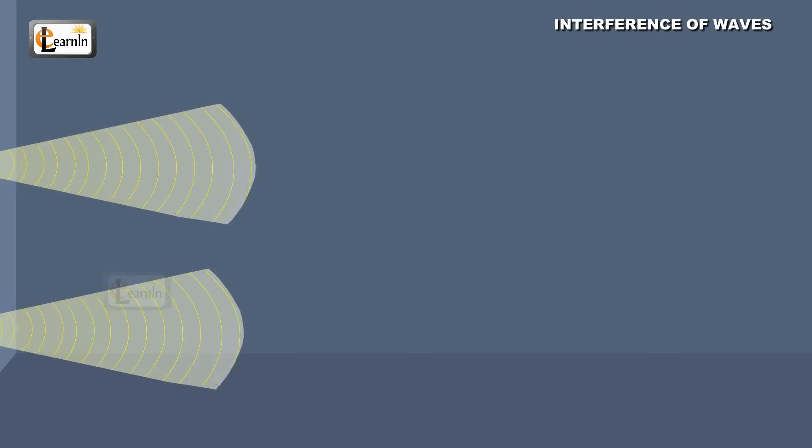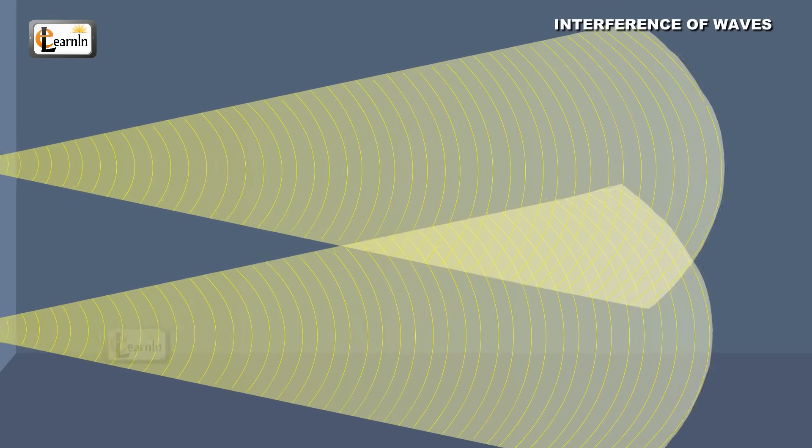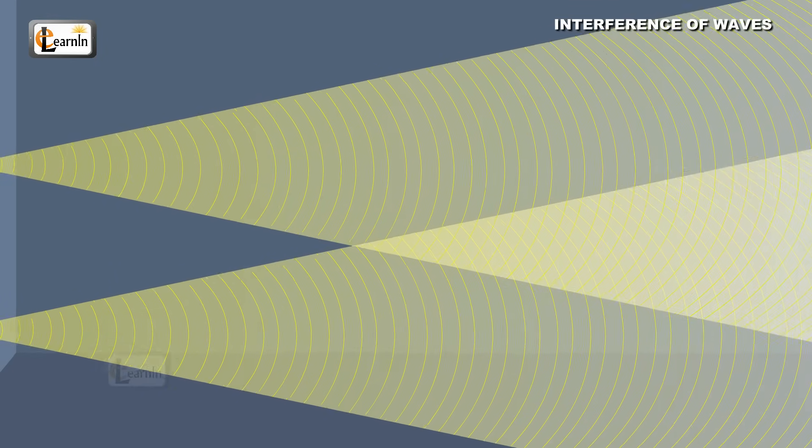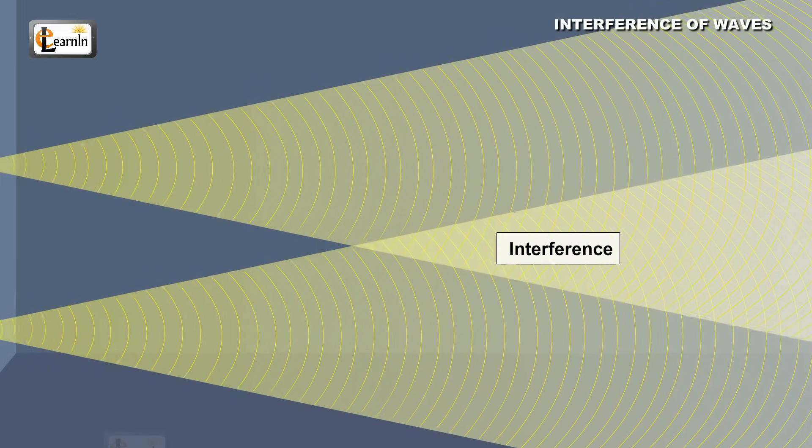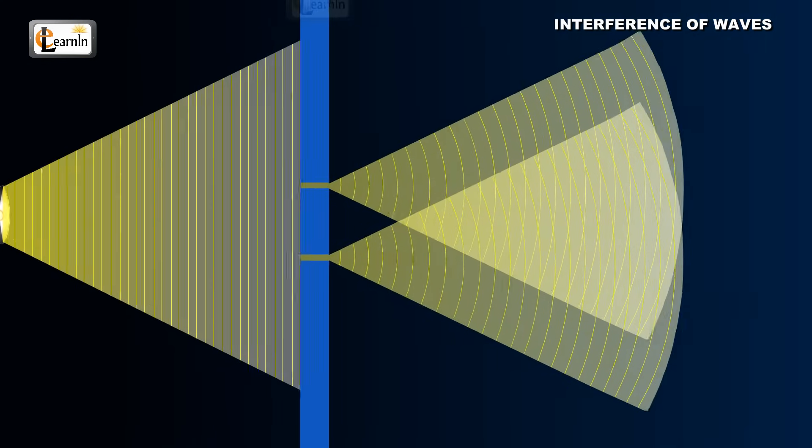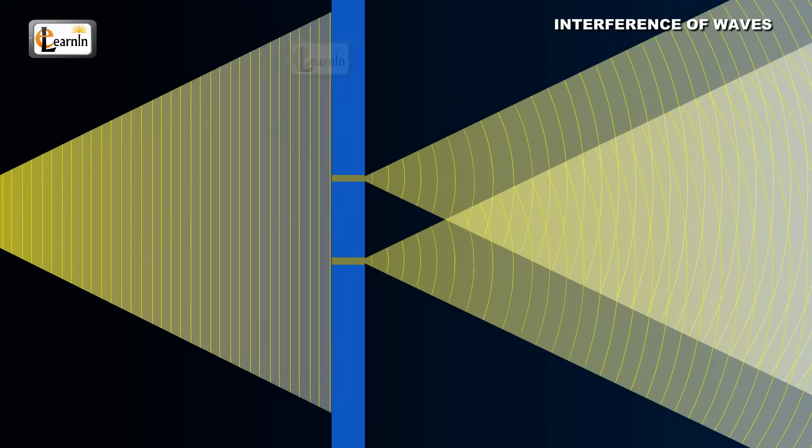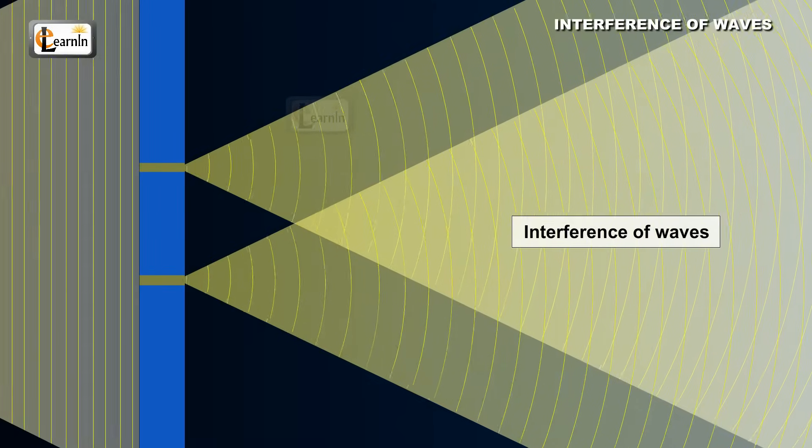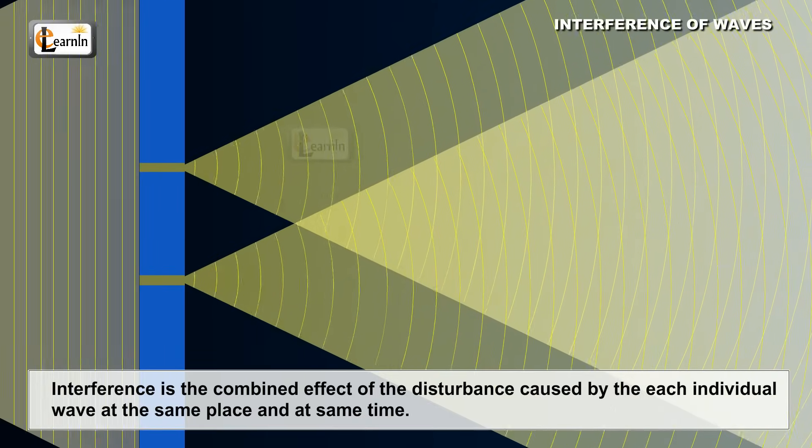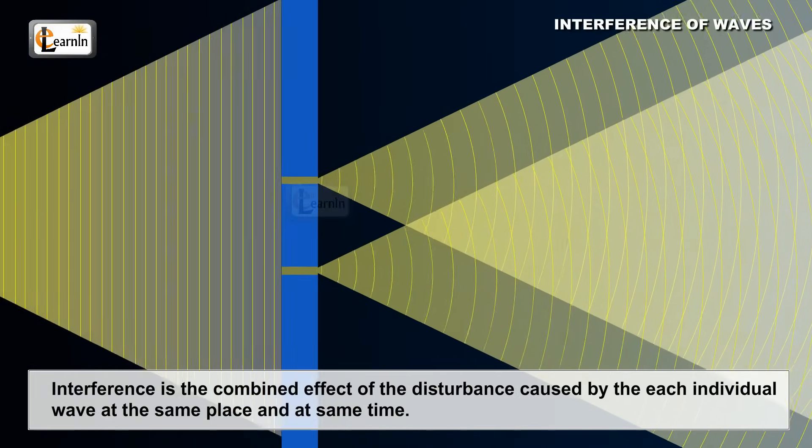We know that two or more wave motions travel in space at the same time. Sometimes these wave motions combine and some physical effects take place. Interference is one such physical effect. When two or more waves cross each other in the same medium, they both interfere and an accident takes place. This accident is known as the interference of waves. Interference is the combined effects of the disturbance caused by each individual wave at the same place at the same time.